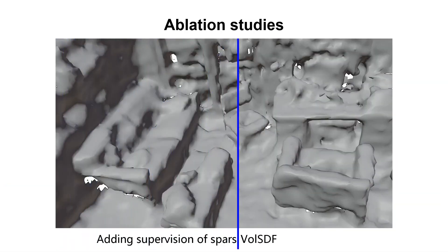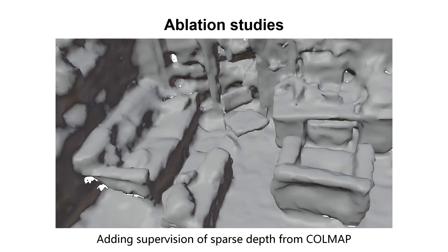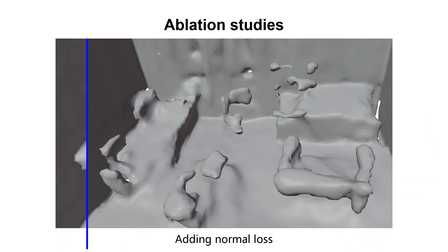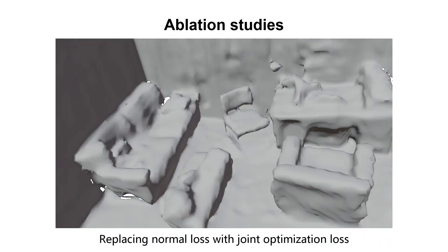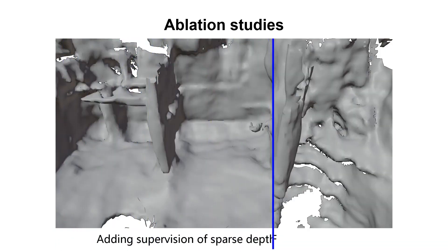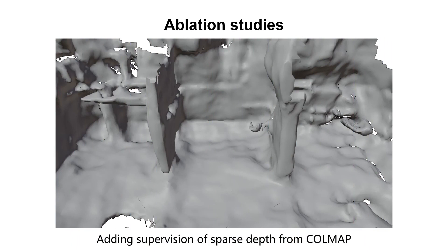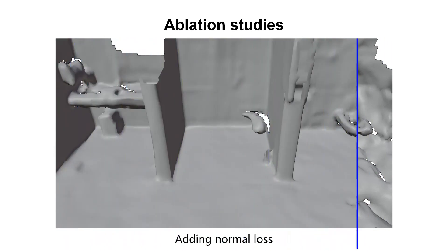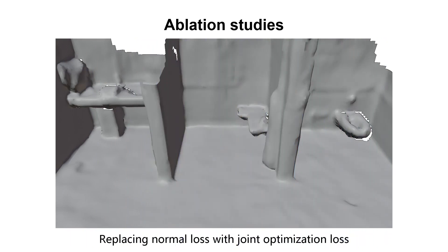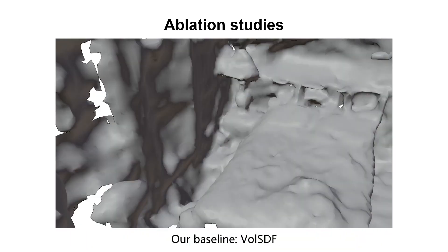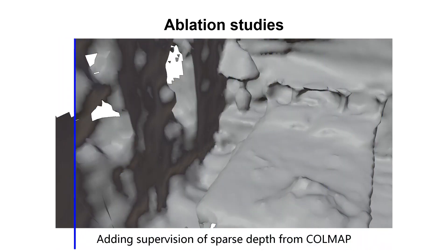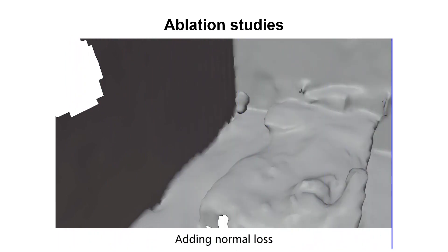We conduct ablation studies on ScanNet and show the effectiveness of each component in our method. The reconstruction results of vanilla SDF are inaccurate and incomplete, especially in planar regions. By adding supervision of colored point clouds, the network can converge better but reconstruction results are still of low quality. By adding normal loss, reconstruction in planar regions improves but some details in non-planar regions could be missed. By replacing normal loss with joint optimization loss, our method achieves the most coherent reconstruction results.